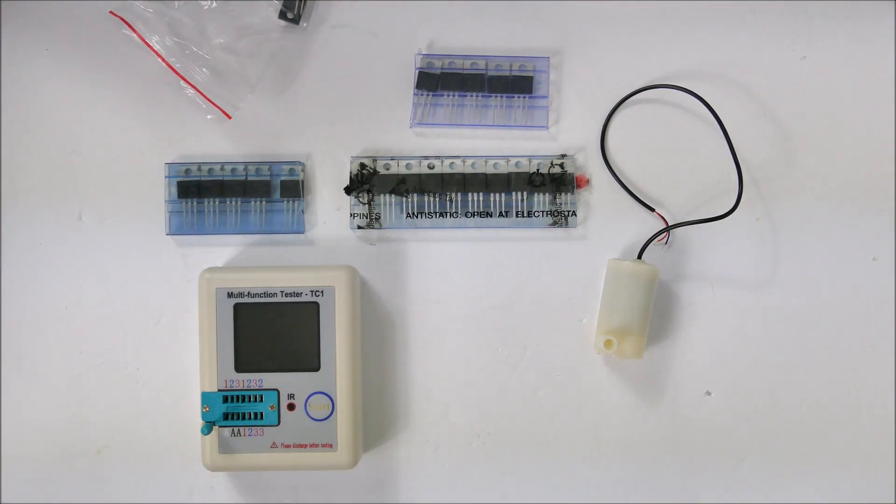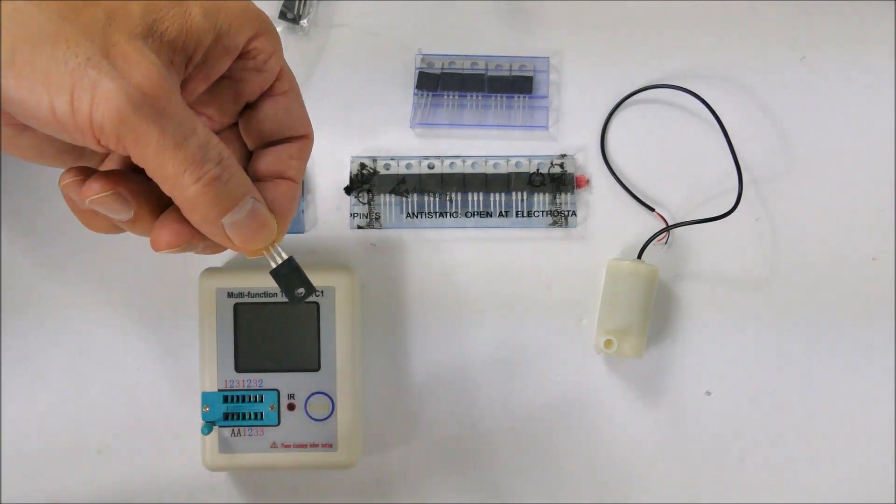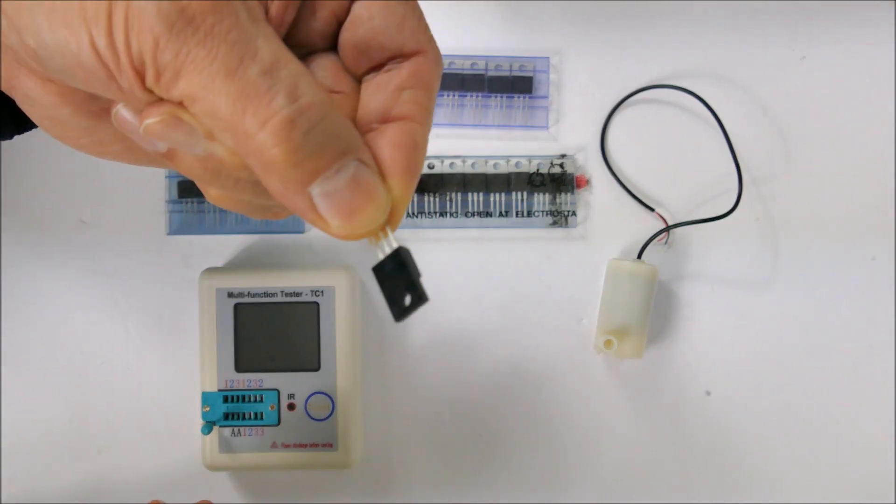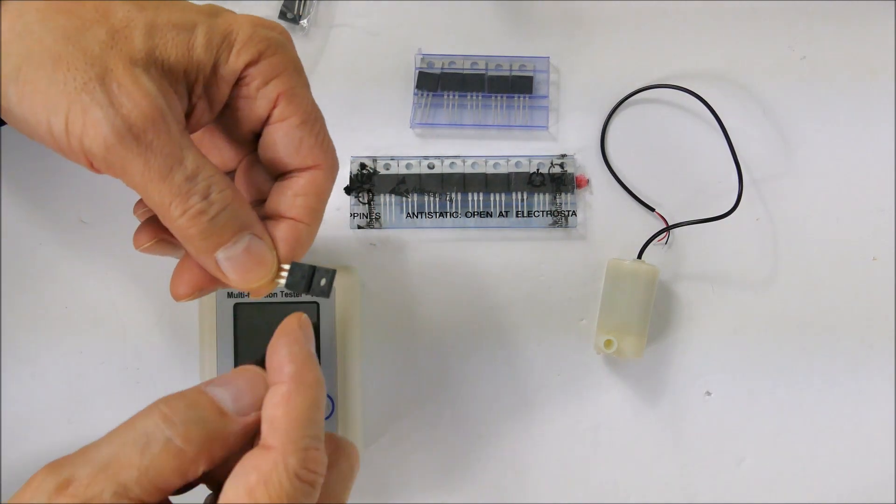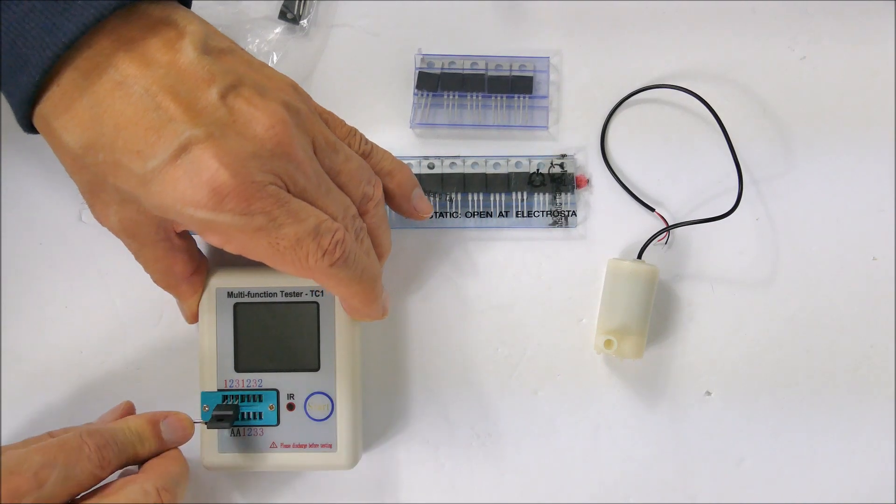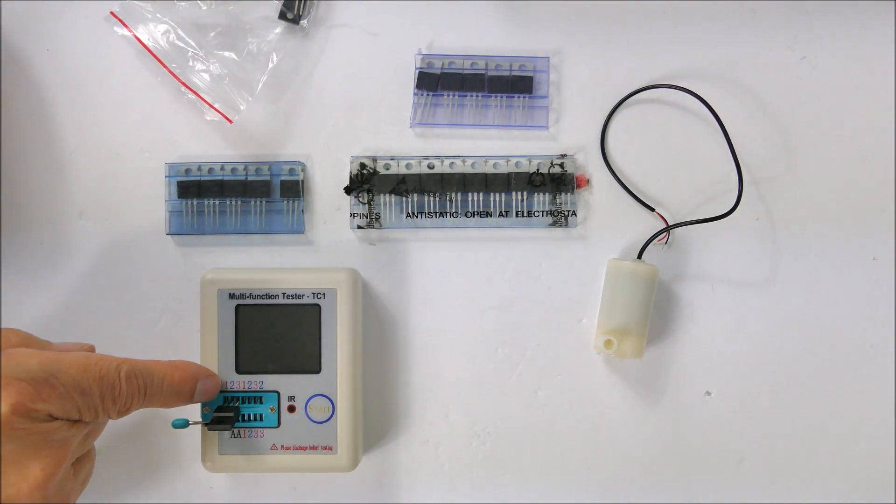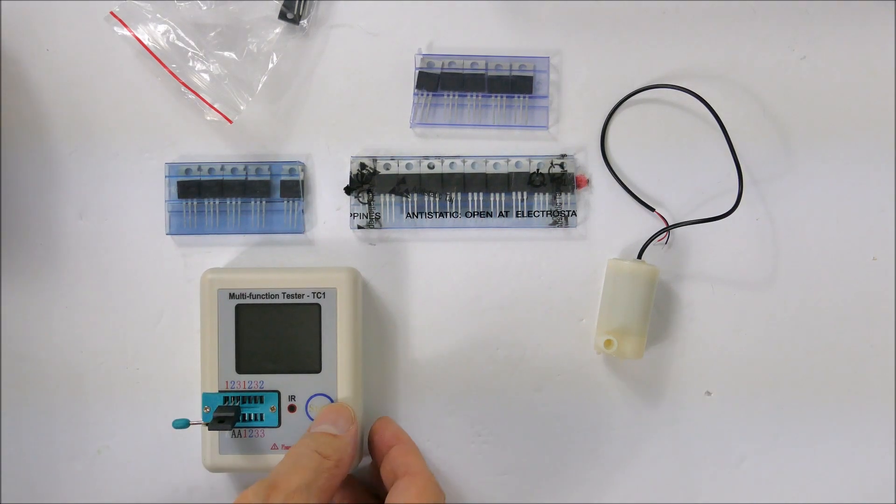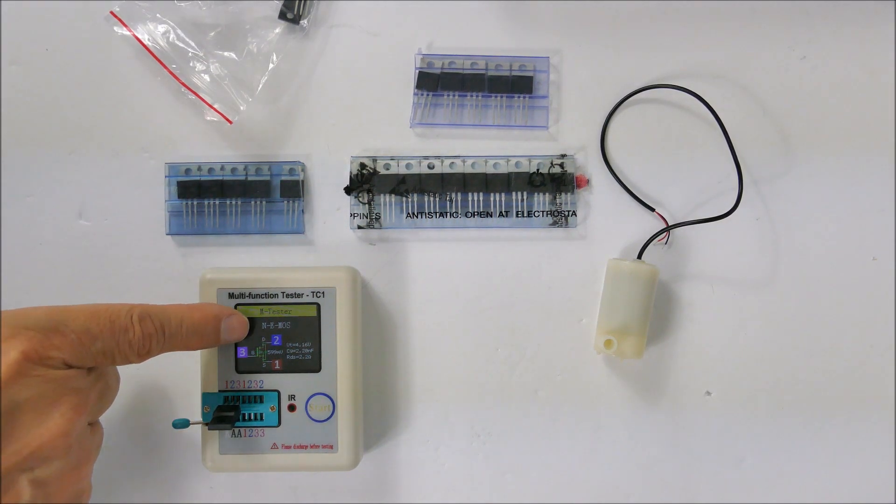For example, here's a transistor in a TO-220 which is actually insulated. If I plug it in here arbitrarily to pins one, two, and three and hit the start button, it will tell me that this is an N-channel MOSFET.